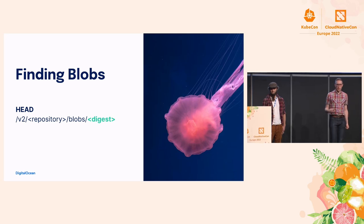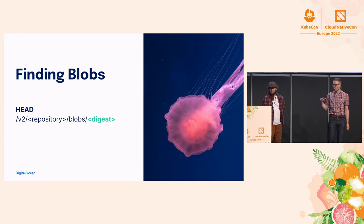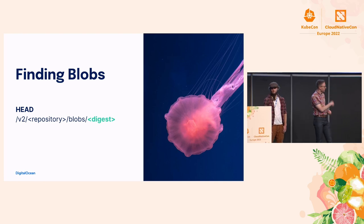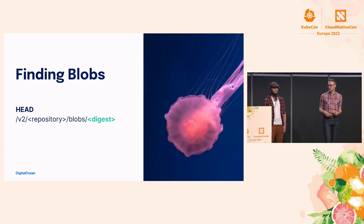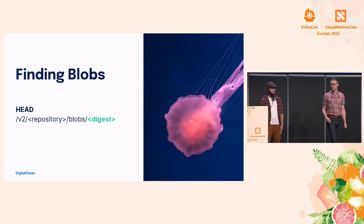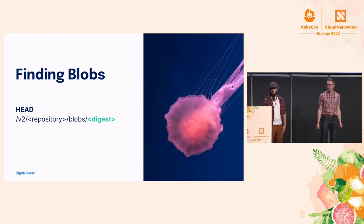Jumping into the spec: the first thing we do is check whether the layers we want to push are already in the registry using a HEAD endpoint. We identify the blob using its digest — a hash of its contents. The registry returns a 200 response code if it already has that blob, or a 404 if it doesn't, and then we know we need to push it.